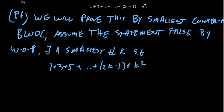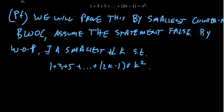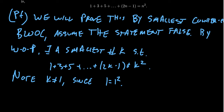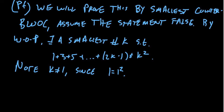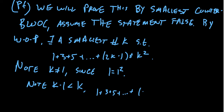So we have the smallest counterexample. Note that k does not equal 1, since in that situation you get 1 equals 1 squared — the sum of odd integers from 1 to 1 is just 1, which equals 1 squared. So k is not 1. Then consider the number smaller than k: note that k minus 1 is less than k, and since it's smaller, that implies that 1 plus 3 plus 5 all the way up to 2(k minus 1) minus 1 equals (k minus 1) squared.